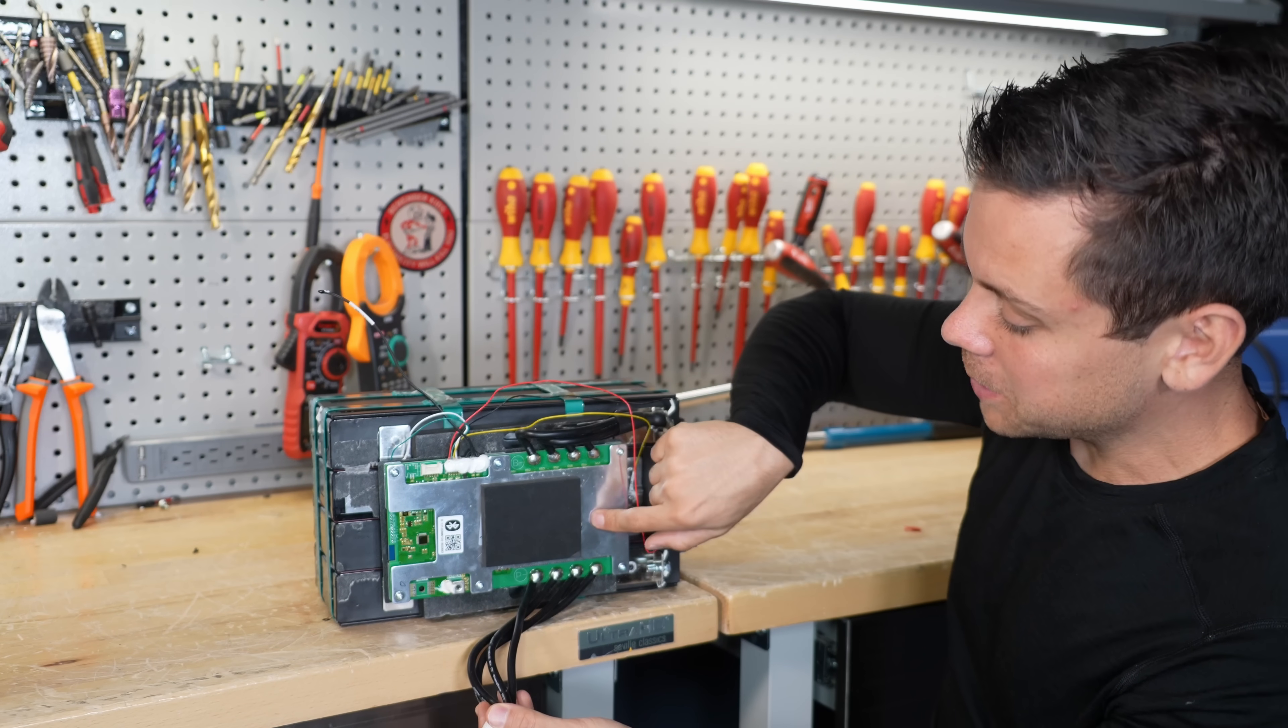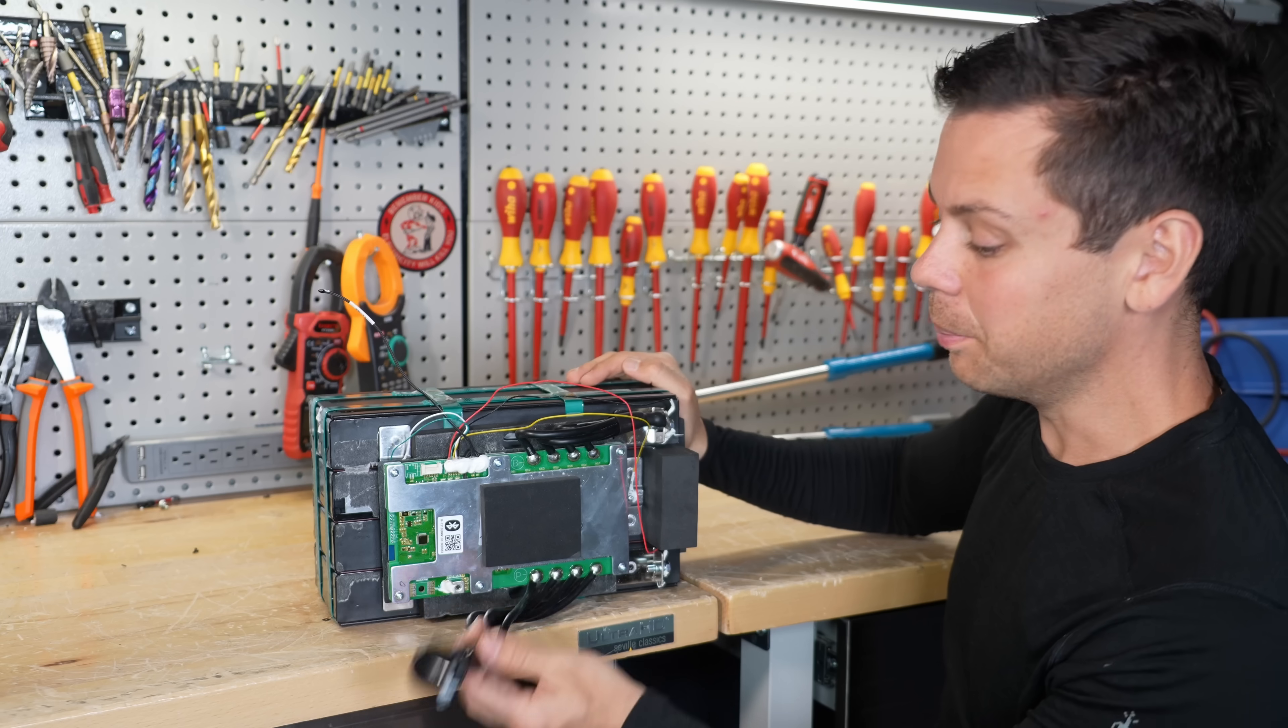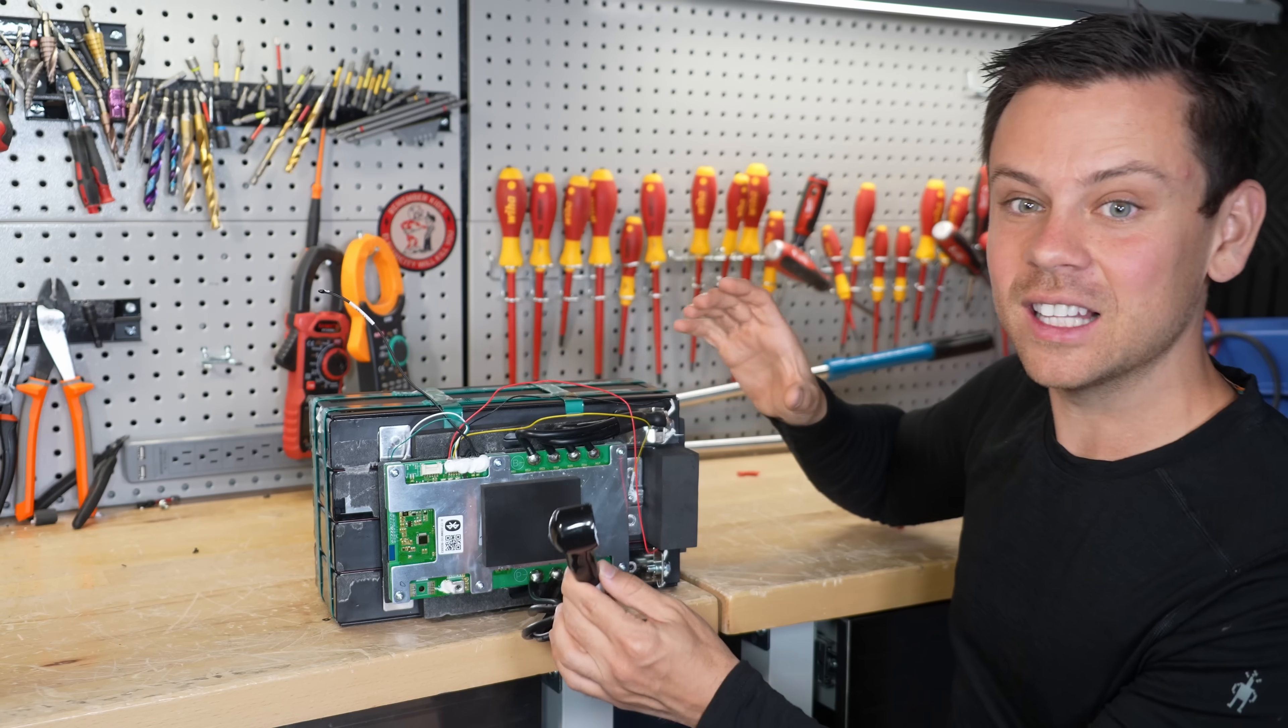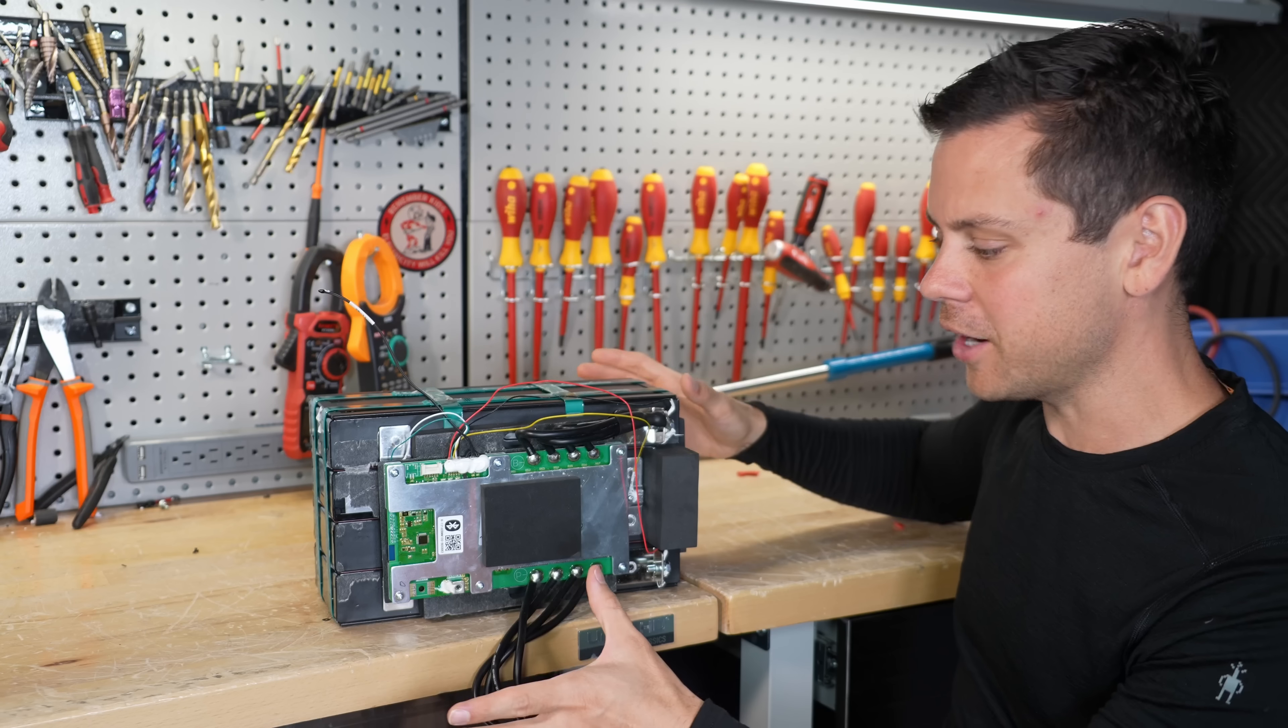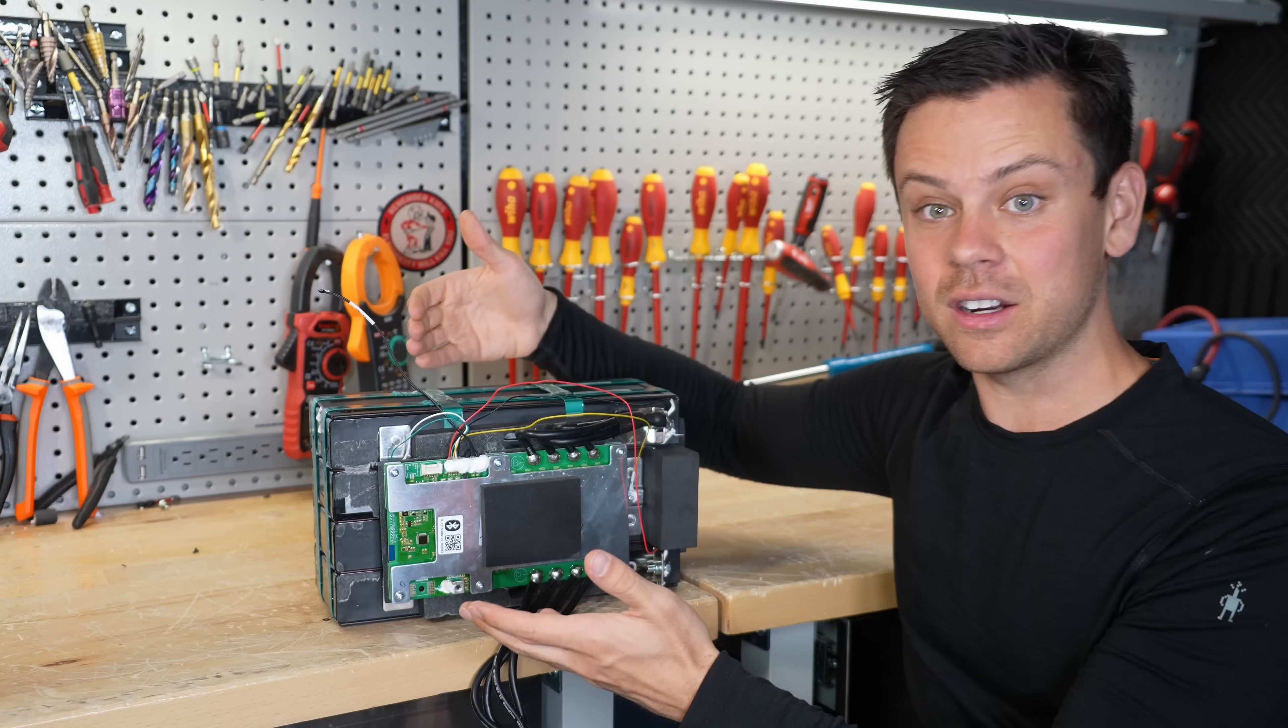Now typically you have a BMS and it protects from this. And typically people put fuses on their batteries. But you can have an internal short. And this can cause a lot of heat. And if there's anything around the battery, like a wooden wall for example, this could actually catch that on fire.